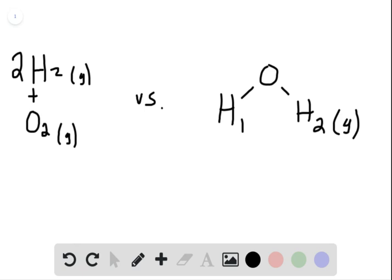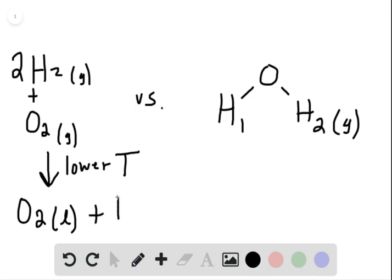But for example, with the sample on the left, you just lower the temperature to the point where oxygen will become a liquid. It's very cold. You're talking about somewhere around minus 200 Celsius is where oxygen condenses. Right? So then you'll have oxygen liquid plus hydrogen gas. That's a way to do this.